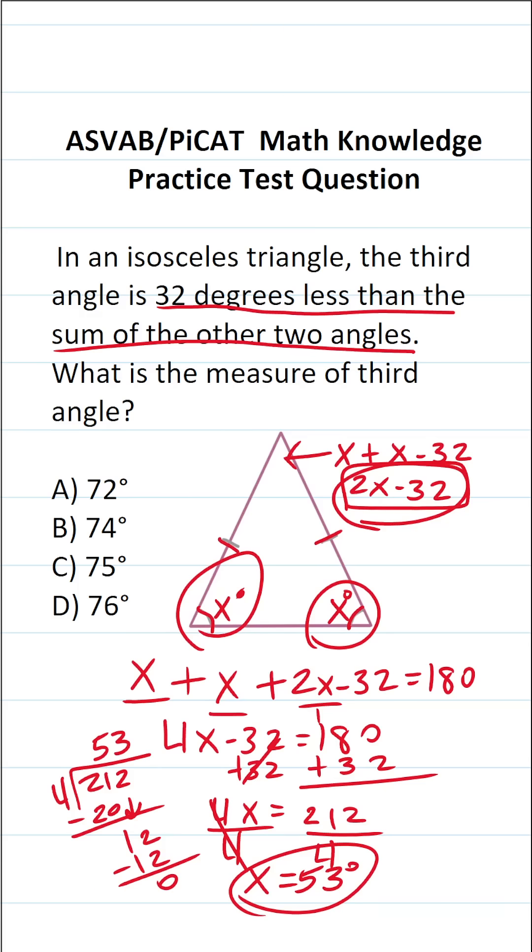We want to know the measure of the third angle, which is not x, it's 2x minus 32. So this becomes 2 times 53 minus 32. What is 53 times 2? 3 times 2 is 6, 5 times 2 is 10. So this becomes 106 minus 32. So as not to make a mistake, we could do this off to the side. 6 minus 2 is 4, 10 minus 3 is 7. So the measure of this third angle is B, 74 degrees.